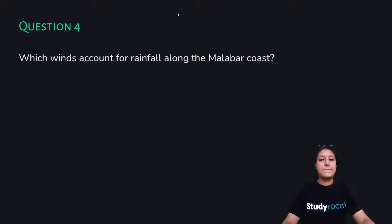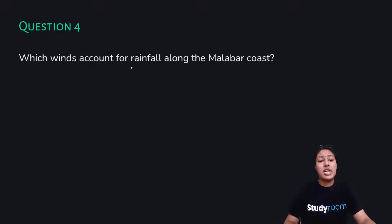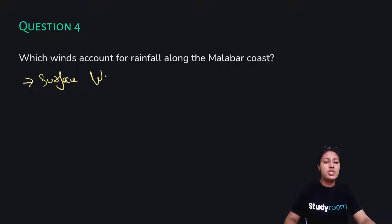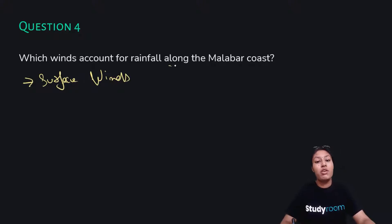Question number four: which winds account for rainfall along the Malabar Coast? The answer is very simple — surface winds account for rainfall along the Malabar Coast.